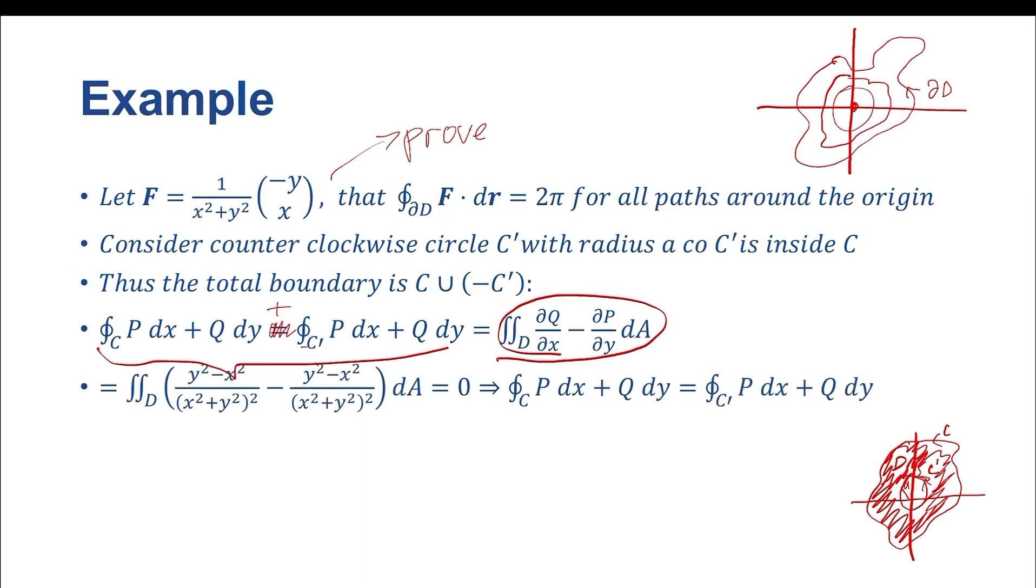Now let's actually perform this integral. Let's see what we get when we take the double integral. We're given the vector function, so we can take partial derivatives. We get the double integral over the domain of (y² - x²)/(x² + y²)² minus (y² - x²)/(x² + y²)². Well, guess what? Both of them will cancel each other and go to zero.